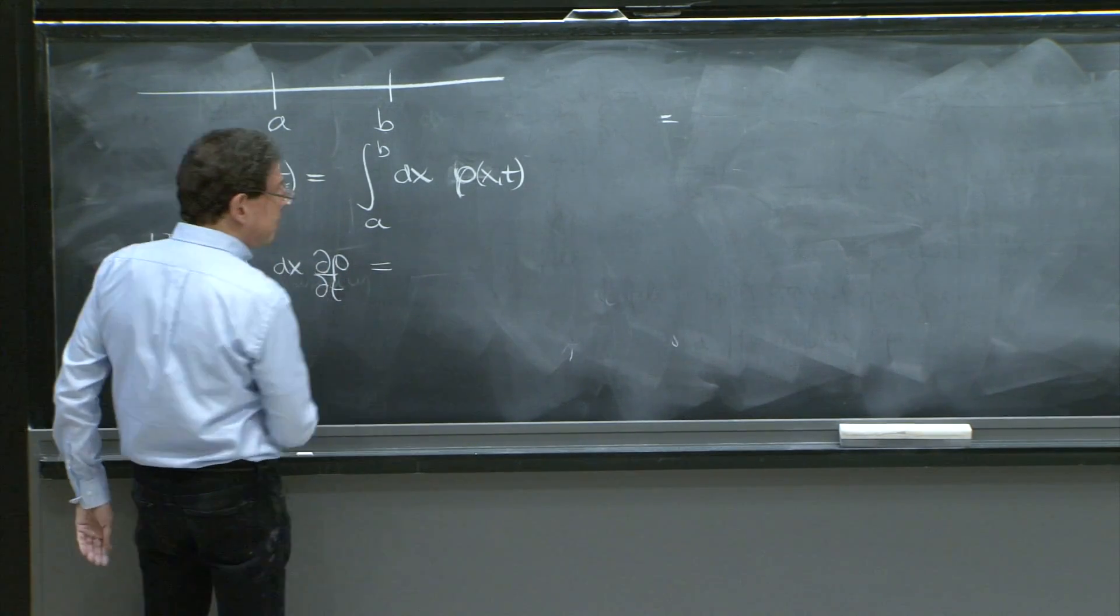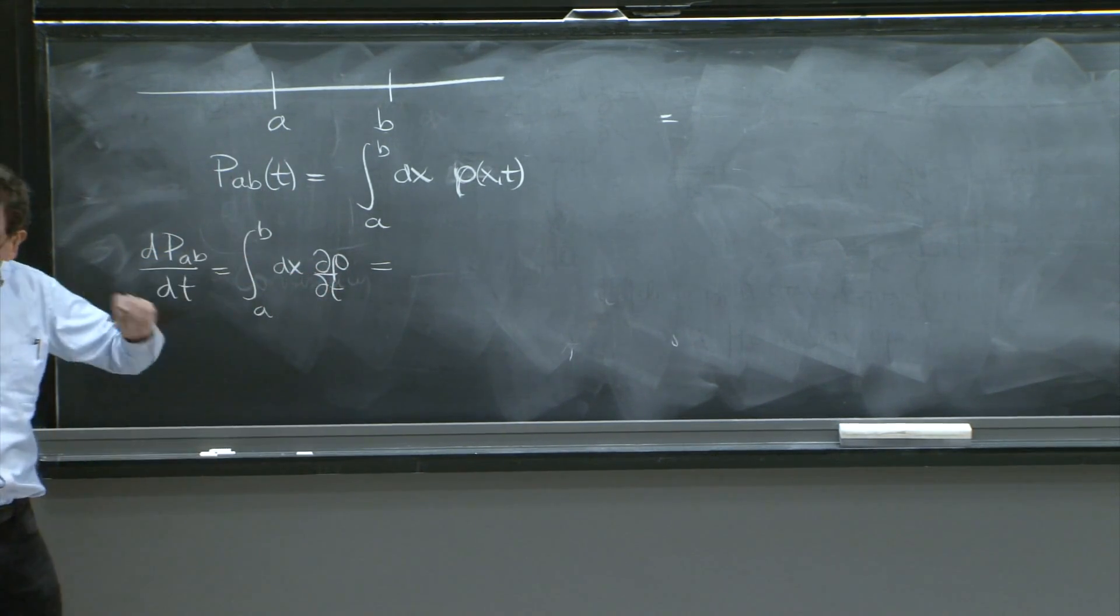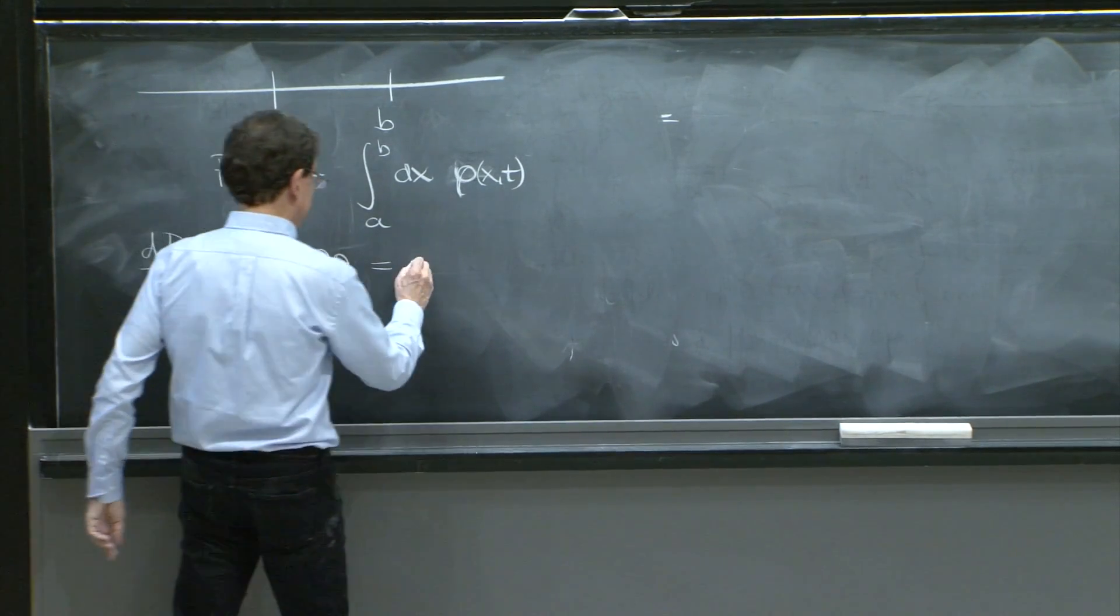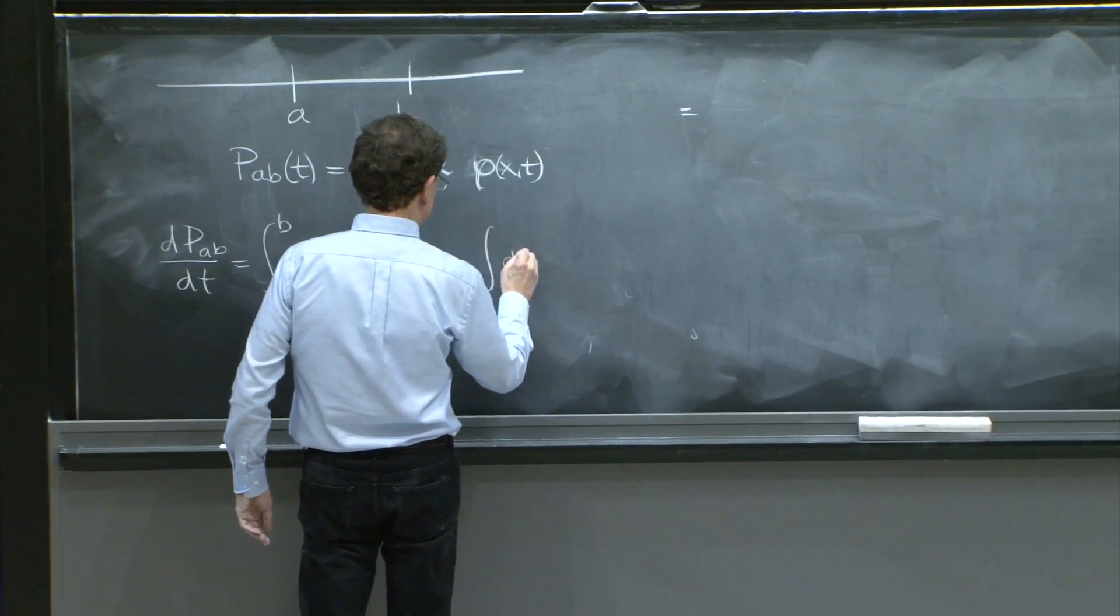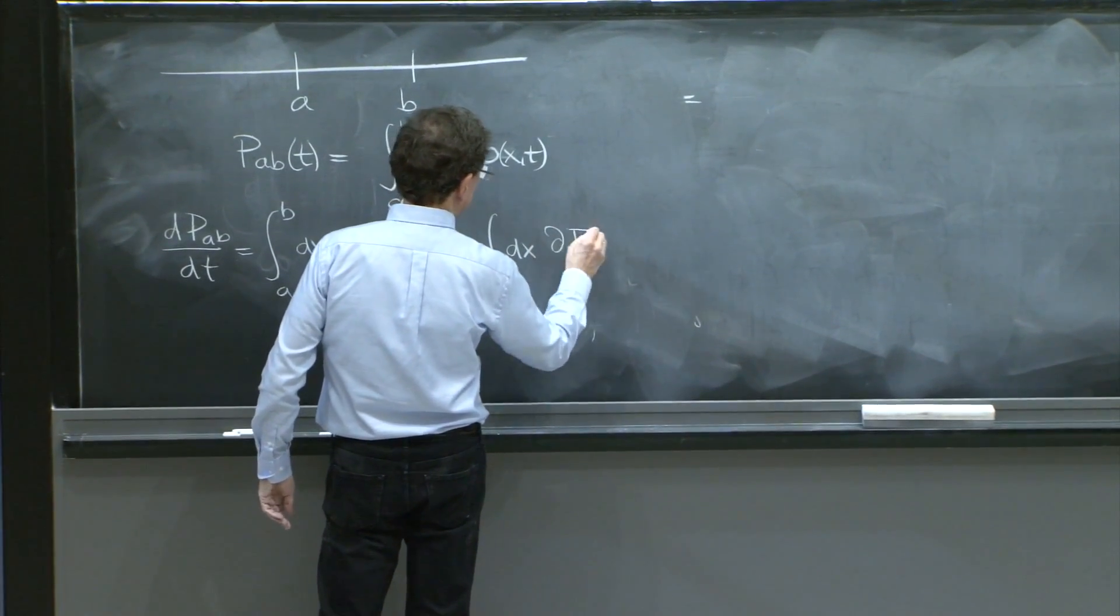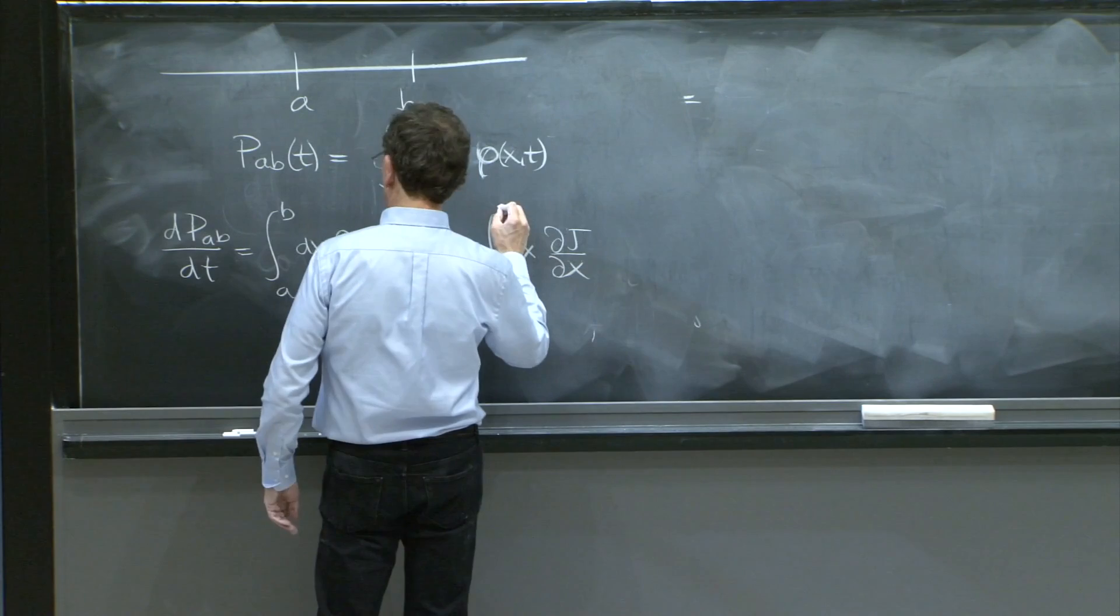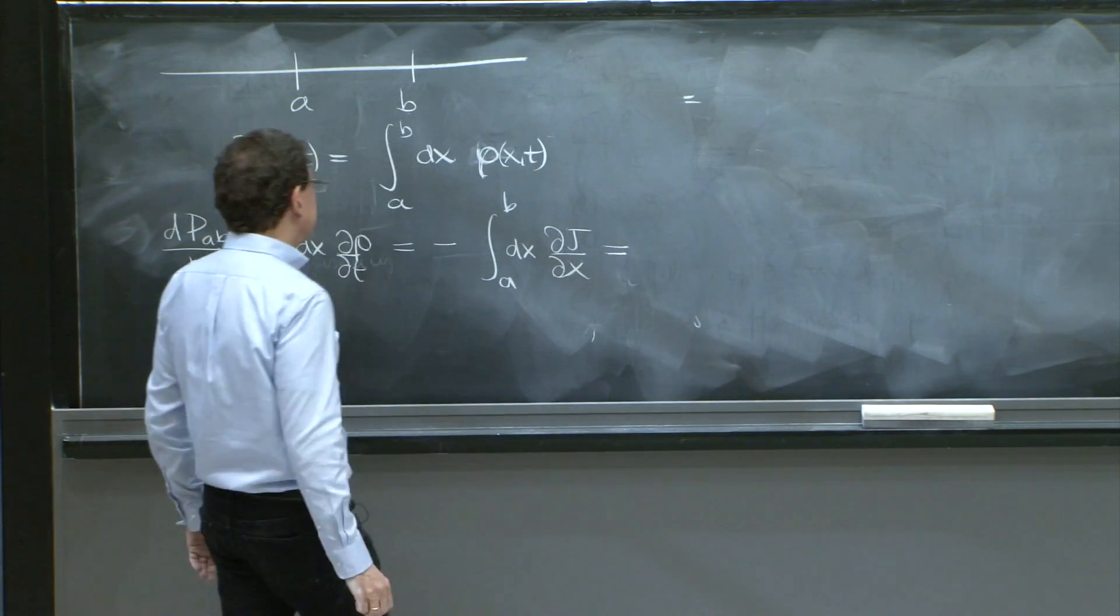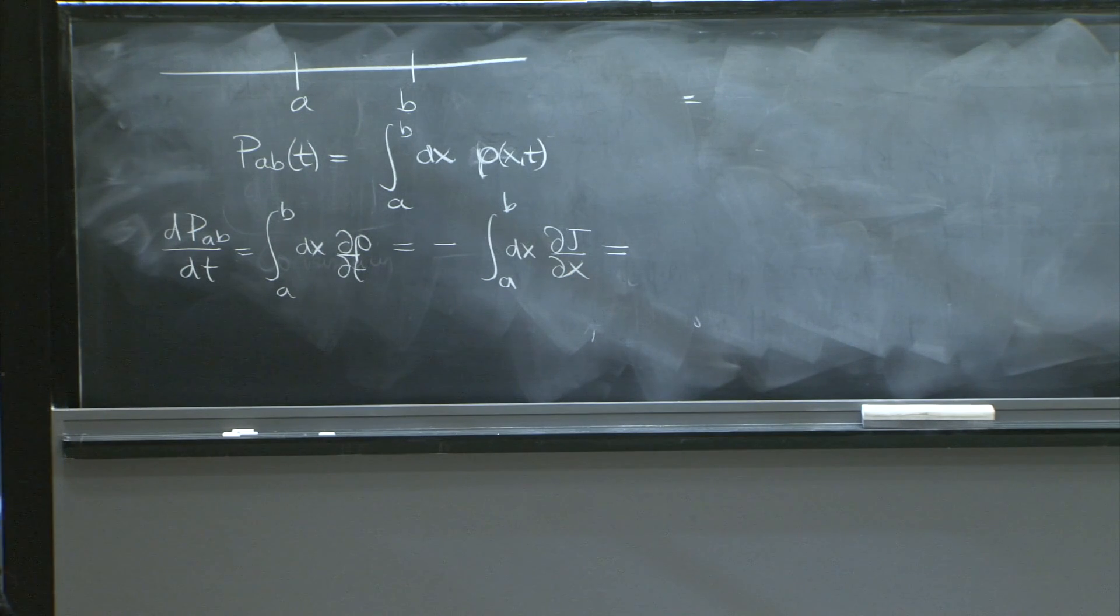That's your probability. That's the integral of psi squared from a to b. Now, what is the time derivative of it? dp ab dt would be integral from a to b dx of d rho dt. But again, for that case, the rho dt is minus dj dx. So this is minus dx dj dx between b and a.